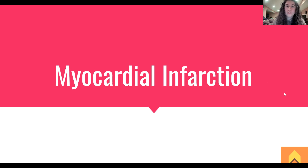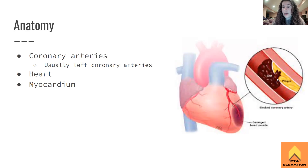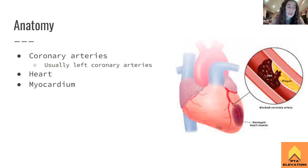Some quick anatomy: a thrombus, clot, or emboli lodges into one of the coronary arteries, which are the arteries that supply the heart with blood. If the heart isn't getting blood, it can't pump blood to everything else. A clot stuck in the heart can also be exacerbated by plaque buildup. With coronary artery disease, arteriosclerosis or atherosclerosis causes fatty plaque buildup within the arteries, decreasing blood flow and increasing blood pressure.